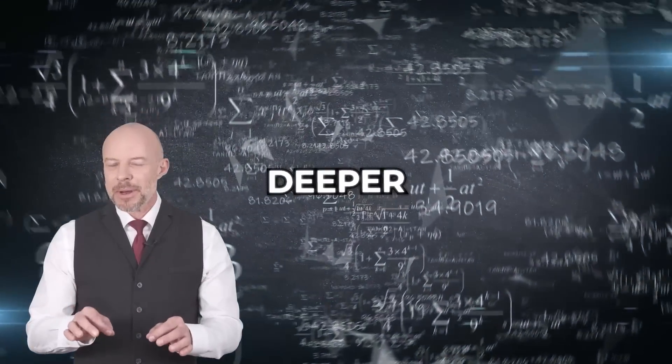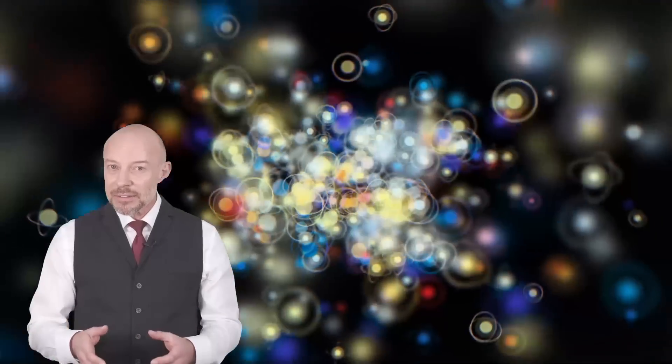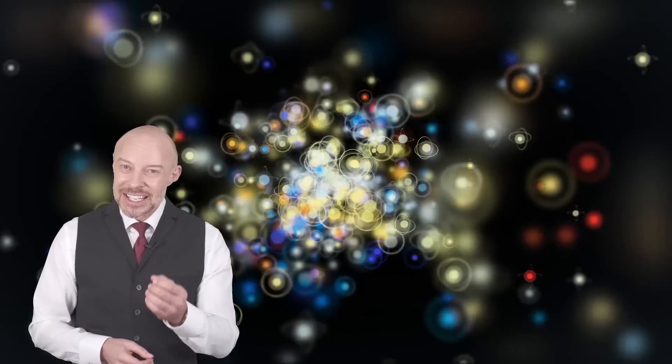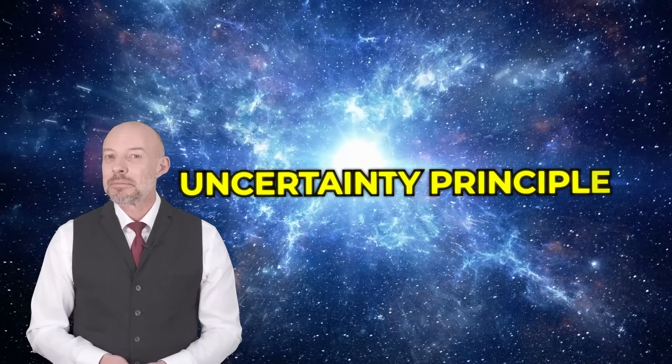To try to understand how all possible states could exist simultaneously at the beginning of it all, we'll now need to dive deeper into quantum physics. The stuff that's happening on the tiniest of scales. And to understand that, we need to dive into something called the uncertainty principle.